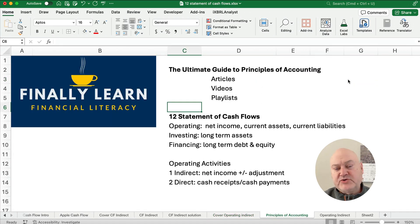So we're in Chapter 12 of Statement of Cash Flows. Let's talk about just real quickly the Operating, Investing, and Financing sections of the Cash Flow Statement. There's three sections. Operating involves net income, current assets, and current liabilities. Investing involves long-term assets, and Financing is long-term debt and equity.